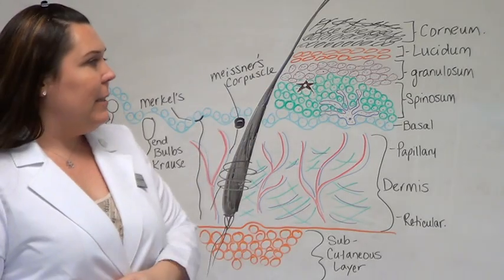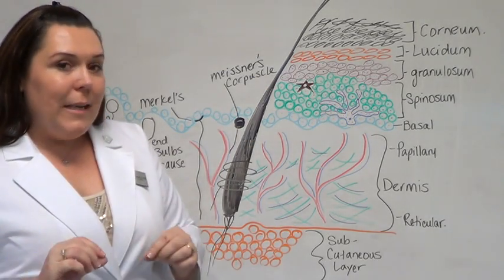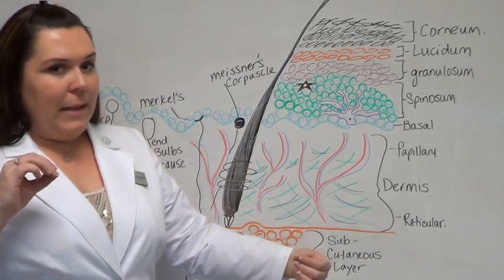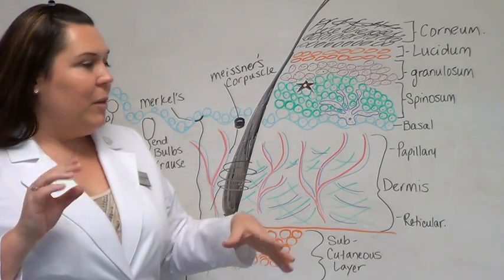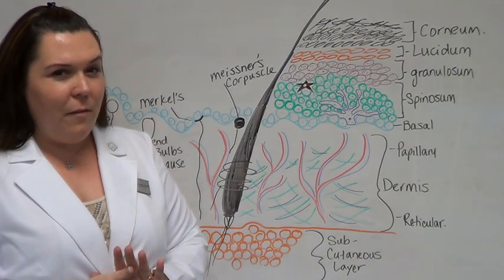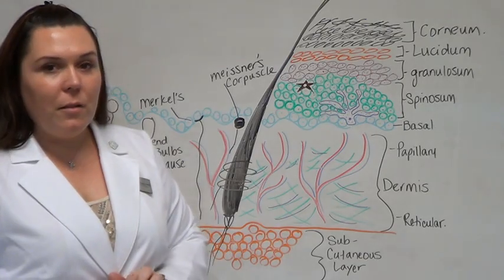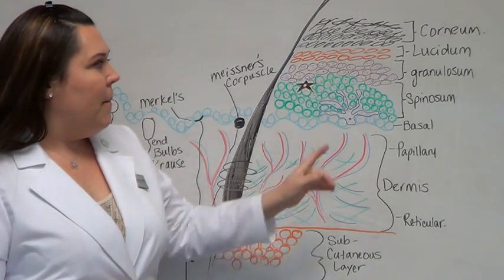Moving up to the next layer, lucidum or stratum lucidum. Lucidum meaning lucid, clear layer. That is the clear layer, which they used to say was only found in the palms of the hands, soles of the feet, but now they're saying they see it everywhere. This is a clear layer. It's also responsible for our fingerprints.